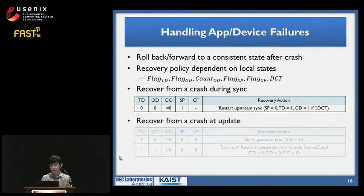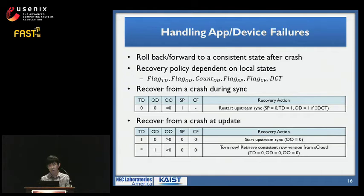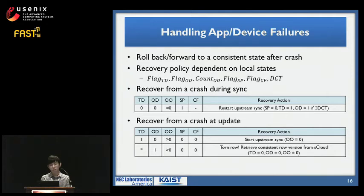If a crash occurred while the object was open for updates, count-OO will be greater than zero. Simba then identifies whether the object is corrupted by checking the dirty flag for the object data. If the dirty flag is zero, the object was opened for write but not yet written, so Simba simply restarts the upstream sync. However, if the dirty flag is one, Simba identifies this row as a torn row and starts server-assisted recovery by requesting the consistent row version from the Simba cloud. Once recovery is done, it resets all flags to zero and we are back to a consistent state.